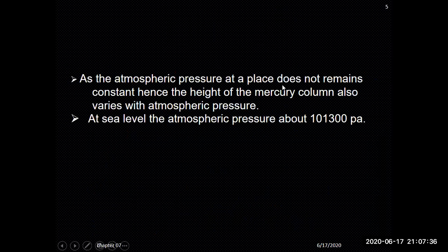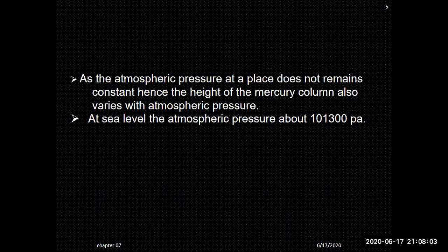The atmospheric pressure at a place does not remain constant; hence the height of the mercury column also varies with atmospheric pressure. At sea level, the atmospheric pressure is at its standard value, but it decreases as you move above sea level. This is because the concentration of air molecules and other suspended particles reduces with altitude, as gravity pulls them closer to the Earth's surface.